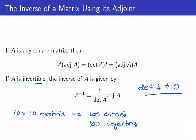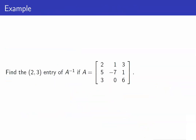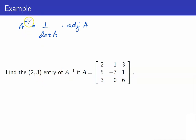However, for the next example, it will turn out that we can use this formula. Suppose we want to find the (2,3) entry of A inverse, where A is given by the matrix shown. Take note that we're only interested in the (2,3) entry of A inverse — we do not need to compute the full inverse of A. In this case, the formula for the inverse using the adjoint would be helpful. We only need the (2,3) entry, so I will just compute the (2,3) entry of the adjoint of A.